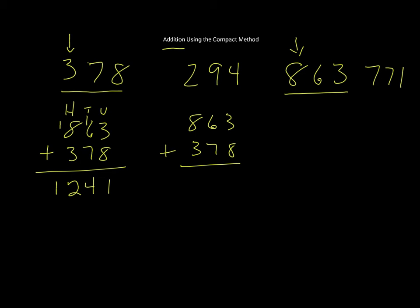I take 3 and 8, that's 11, and I write 11 here. Now I take 70 and 60 - 70 and 60 is 130 - I write 130 here. I now take 300 and 800, and that's going to be 1100.